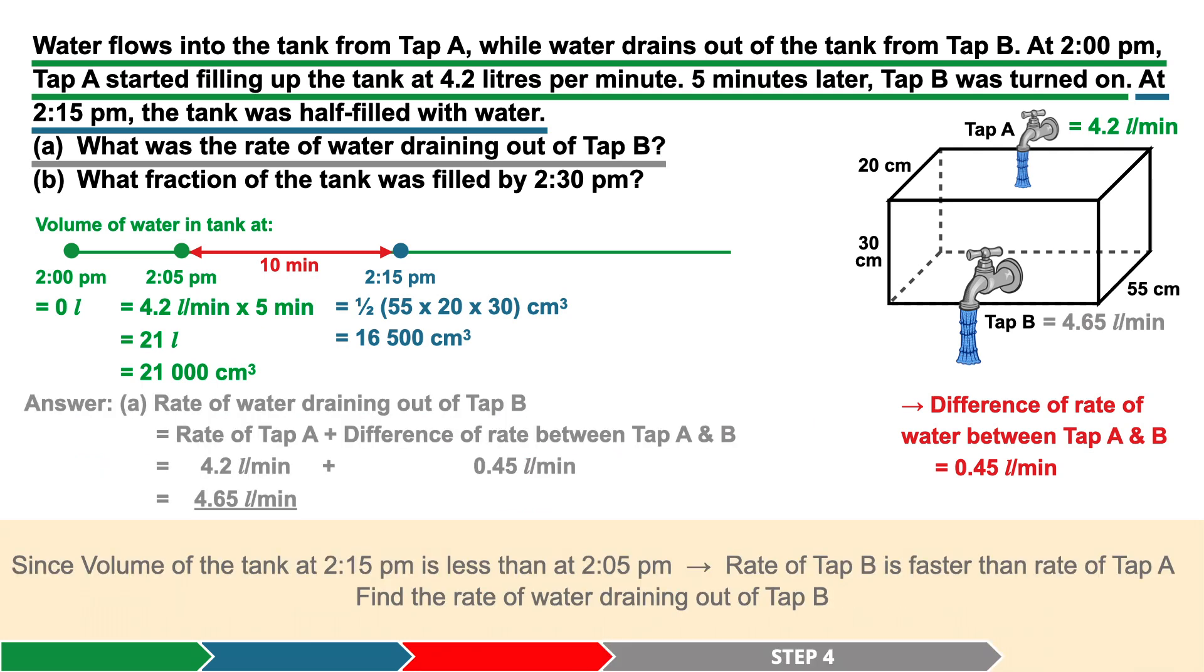Step 4. What is the rate of water draining out of tap B? Since we know that the volume of the tank at 2:15 p.m. is less than the volume at 2:05 p.m., this means that the rate of water draining out from tap B is faster than the rate of water flowing in from tap A.